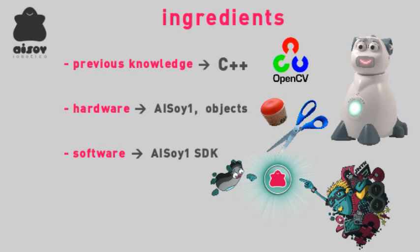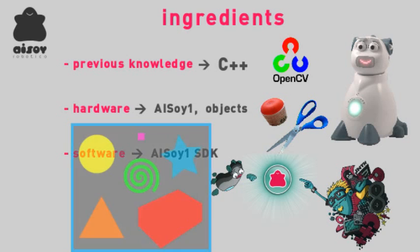For this purpose we are going to use one Isoi1 robot and the standard vision library OpenCV. The method we are going to use is quite easy to understand. As the color of the object we want to track is known, it is segmented in the captured images by the robot's camera.